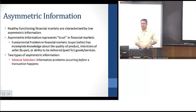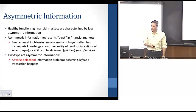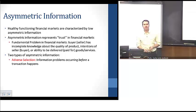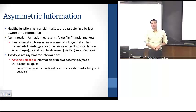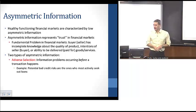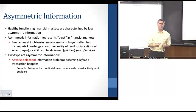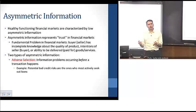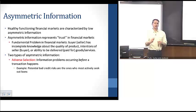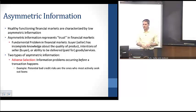There are two types of asymmetric information. The first is adverse selection — information problems that occur before a transaction happens. The classic example is that the people most likely to want to borrow money are also the ones coming to the bank to borrow. Potential bad credit risks are going to be the first ones in line, because people who already have money and are good credit risks don't necessarily need to borrow in the first place.